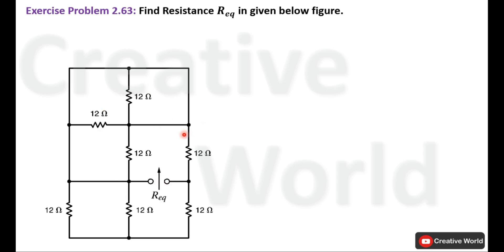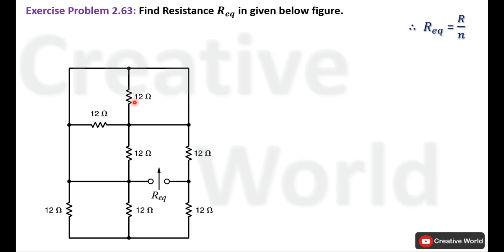Let's proceed towards the solution. We will start solving this problem from this end. These two resistances are connected in parallel and both have the same value. We will use this formula to calculate their R equivalent and replace it in place of these two resistances.